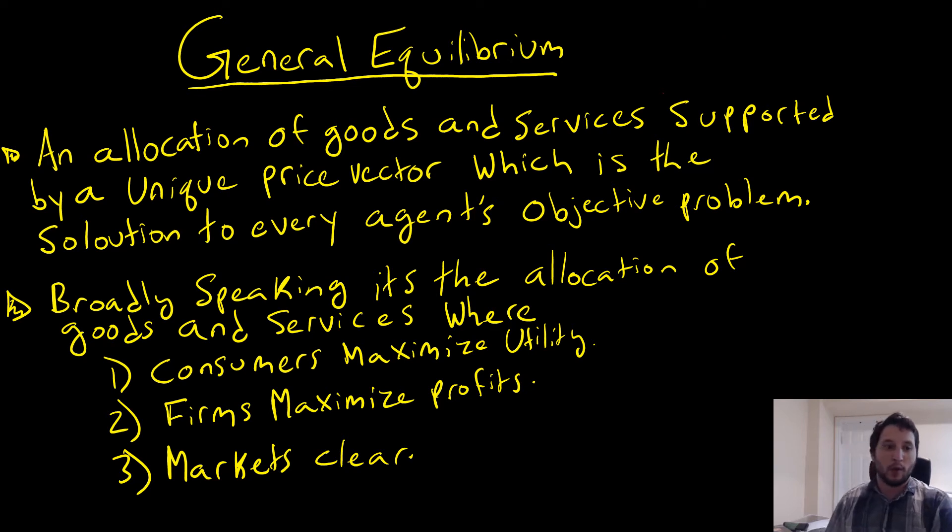Hey guys, what's up? Welcome to this video where we're going to give a definition of what general equilibrium in economics is. A general equilibrium in economics is an allocation of goods and services supported by a unique price vector. That means we just have a set of prices that support a specific allocation of goods and services. Allocation just means who gets what, right?